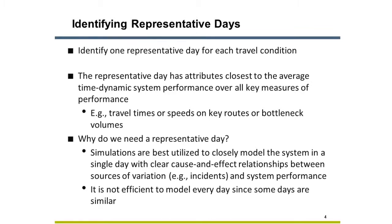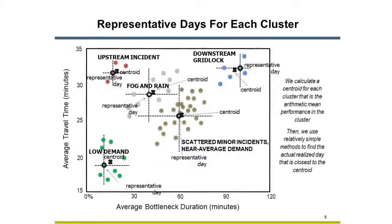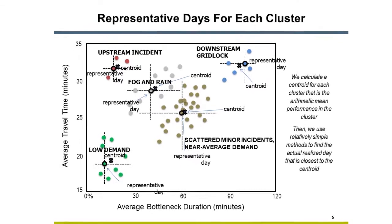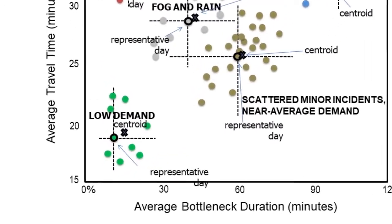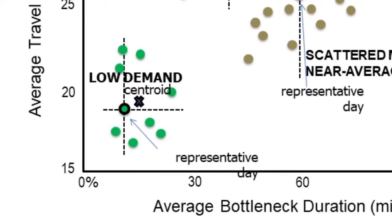Why use a representative day? Why not just take the average? The representative day is close to the average within cluster travel conditions. But most importantly, it is an actual day, with clear cause and effect relationships between specific causes of congestion and related patterns of delay. For our sample data, here's how to visualize the representative days. They lie close to the cluster average, or centroid, in each case. I get it.